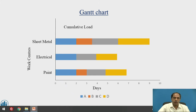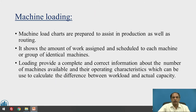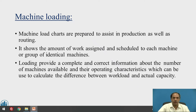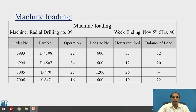Machine load charts are also prepared to assist in production planning and routing. They show the amount of work assigned and scheduled to each machine or group of identical machines. Loading provides complete and correct information about the number of machines available and their operating characteristics, which can be used to calculate the difference between workload and actual capacity. The Gantt chart gives a correct picture of how much load is available, how much is balanced, and what capacity is booked by various orders.